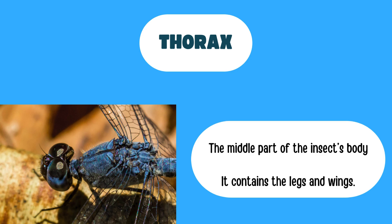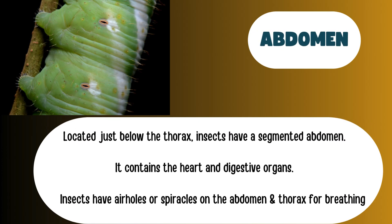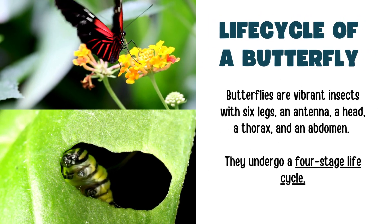Then comes the thorax, which is the middle part of the insect's body. It contains the wings and legs. Below the thorax, insects have a segmented abdomen. It contains a heart and digestive organs, and importantly, it also contains air holes or spiracles which allow the insects to breathe.